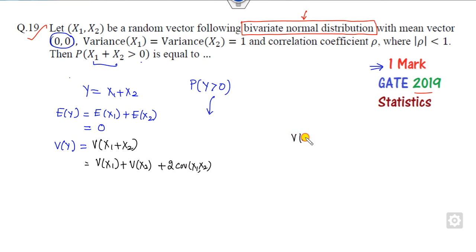Because all of you know that the variance of ax1 plus bx2 is a squared variance of x1 plus b squared variance of x2 plus 2ab covariance of x1, x2. In this example, a is 1, b is 1.